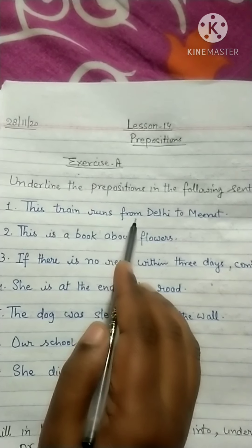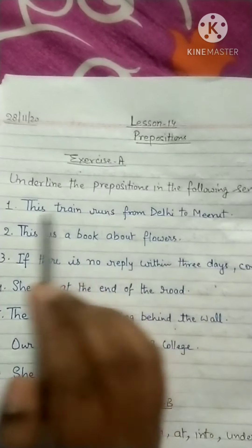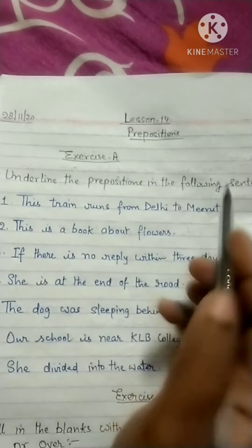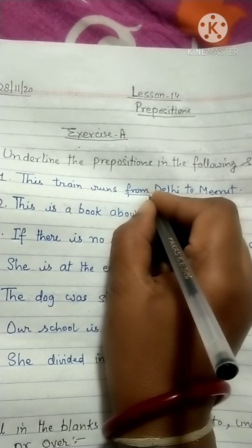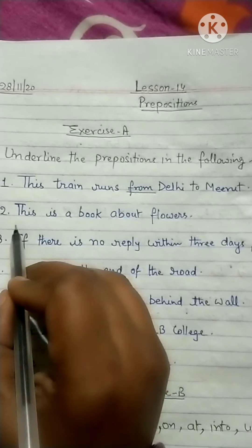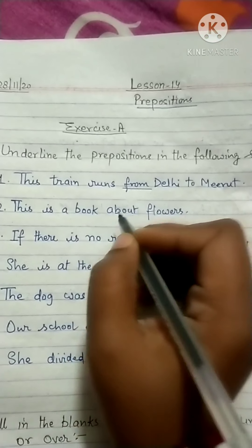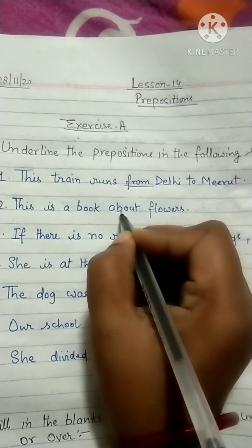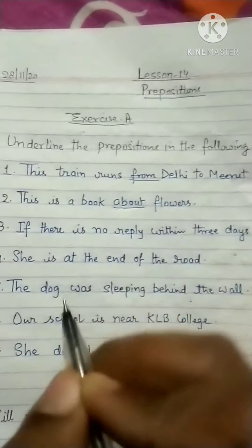As I have explained, prepositions are the words which make a relationship with other words. So: 'This train runs from Delhi to Meerut' — in this sentence, 'from' is the preposition. Next: 'This is a book about flowers' — it is showing the relationship between a book and flower, so 'about' is the preposition here.